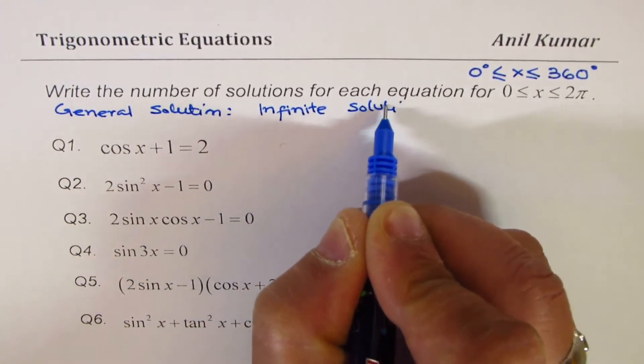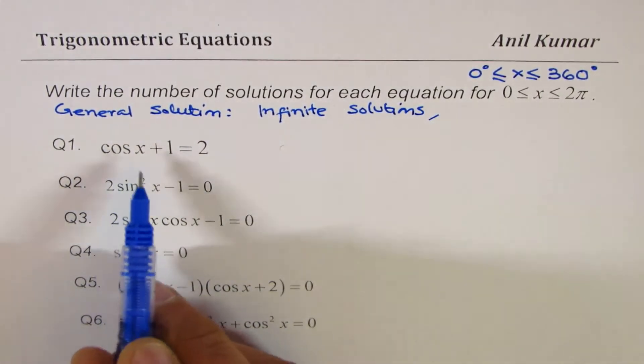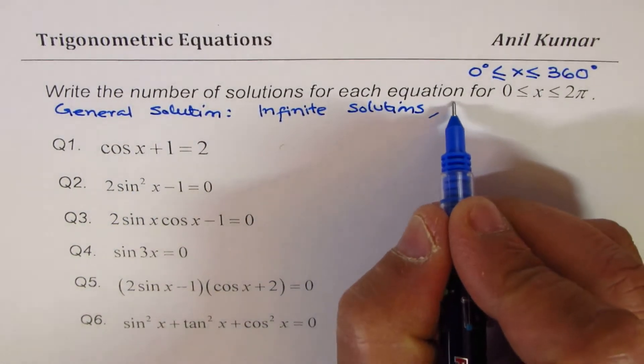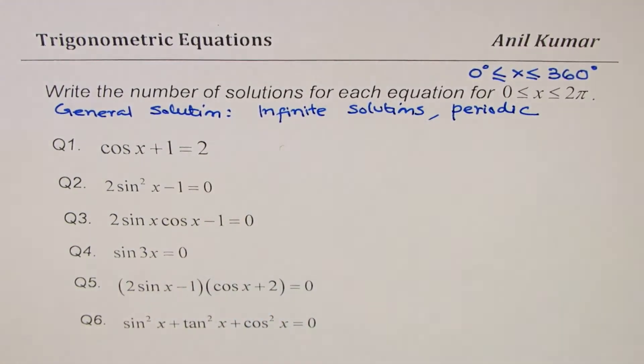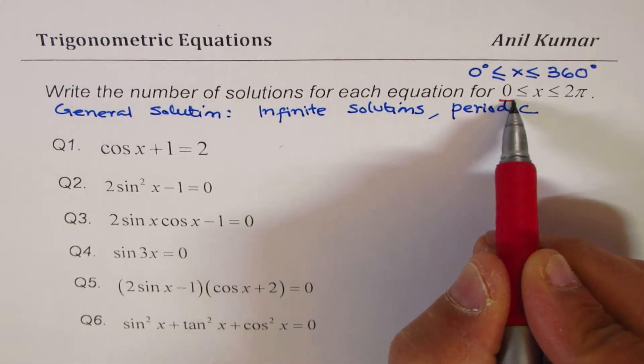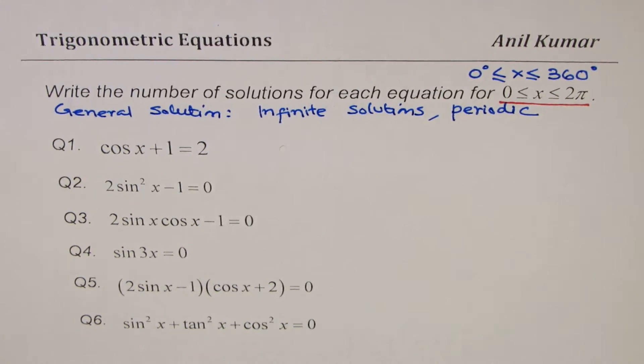Why? Because most of these trigonometric functions are periodic. In this particular video, we have restricted ourselves to a particular domain and we are looking for all possible solutions within 0 to 2π or 0 to 360 degrees.